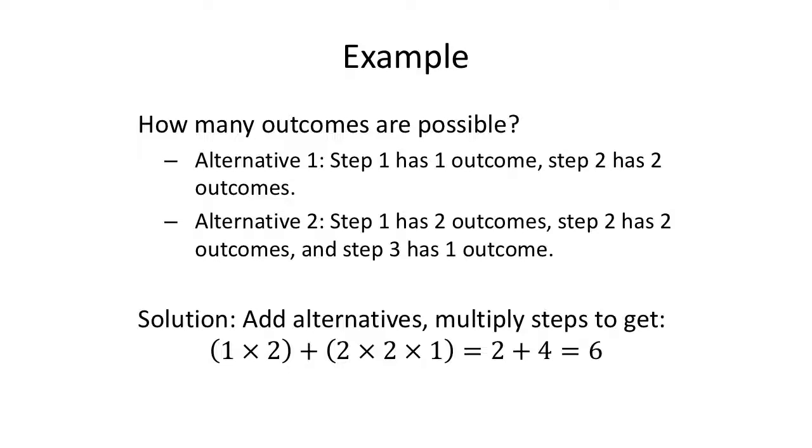So, in our first example, alternative one, step one has one outcome, step two has two outcomes. And alternative two is a sequence. Step one has two outcomes, step two has two outcomes, and step three has one outcome. Because we have alternatives, I'm going to add these two. So alternative one is a sequence of steps, so I'm going to multiply within here. Step one has one outcome, step two has two outcomes. So for alternative one, I have one times two possible outcomes.